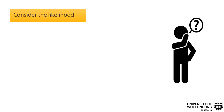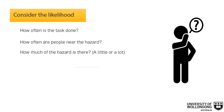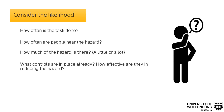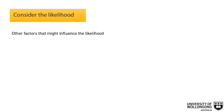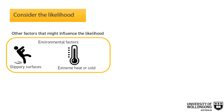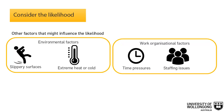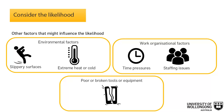The likelihood that someone will be harmed can be estimated by considering the following: how often is the task done, and does this make the harm more or less likely? How often are people near the hazard, how much of the hazard is there, and what controls are in place already? Has an incident or near miss happened before, either in your workplace or somewhere else? Other factors that may influence the likelihood include environmental factors such as slippery surfaces or extreme heat or cold, work organizational factors like time pressures or staffing issues, and whether tools and equipment are appropriate for the task.